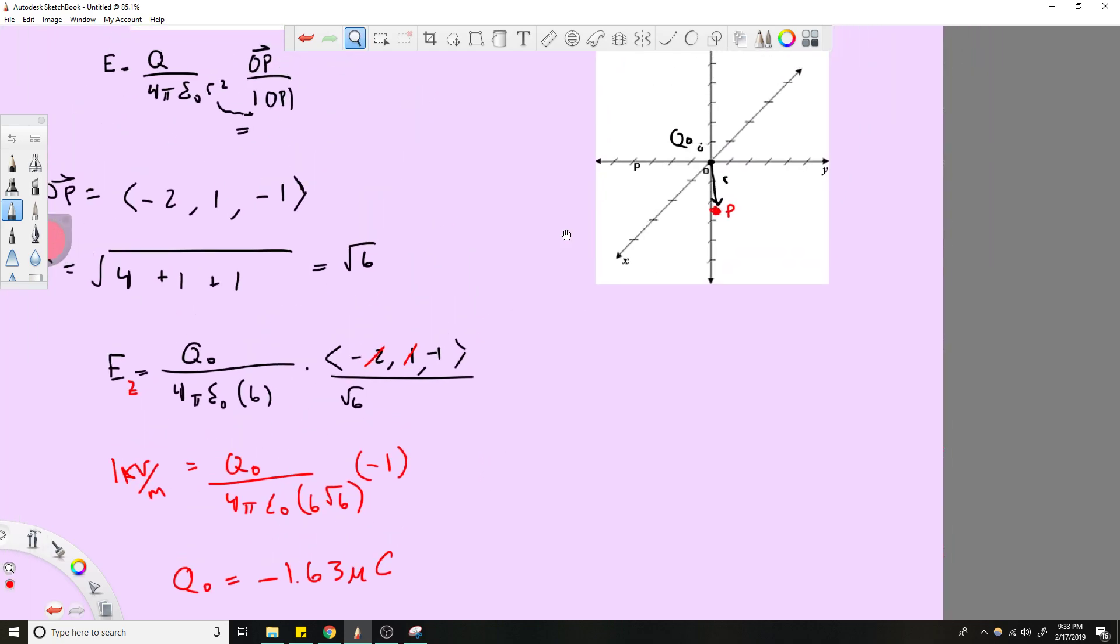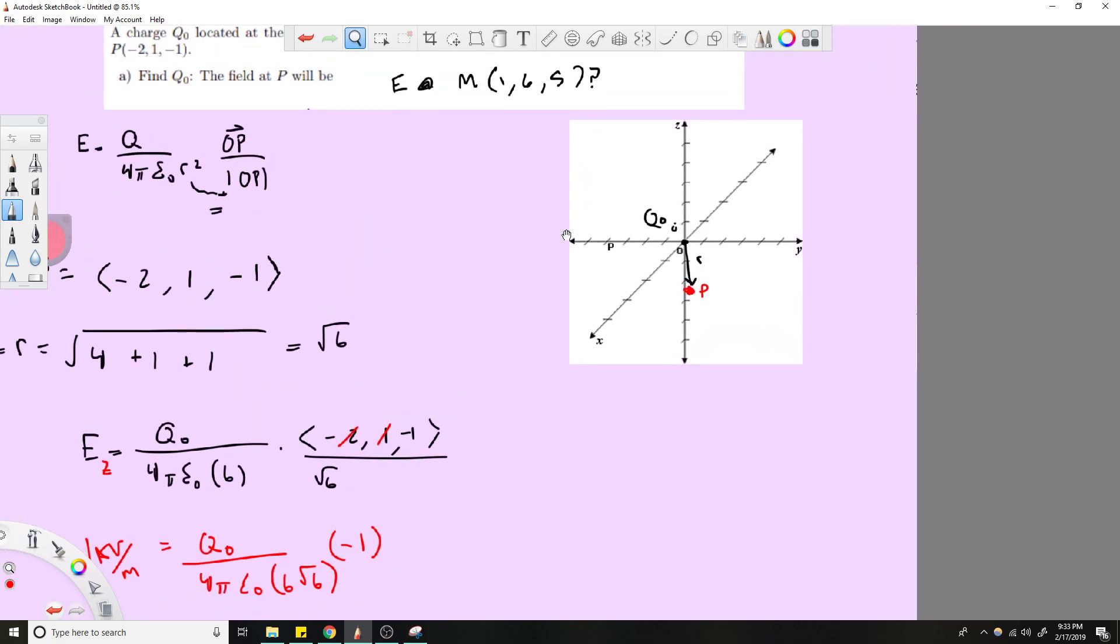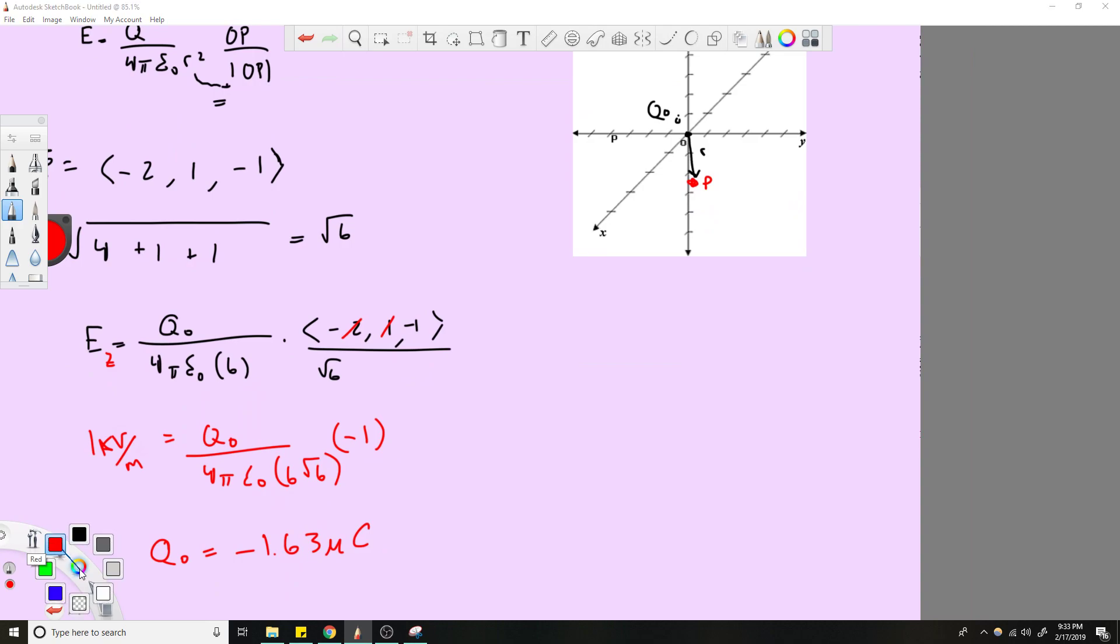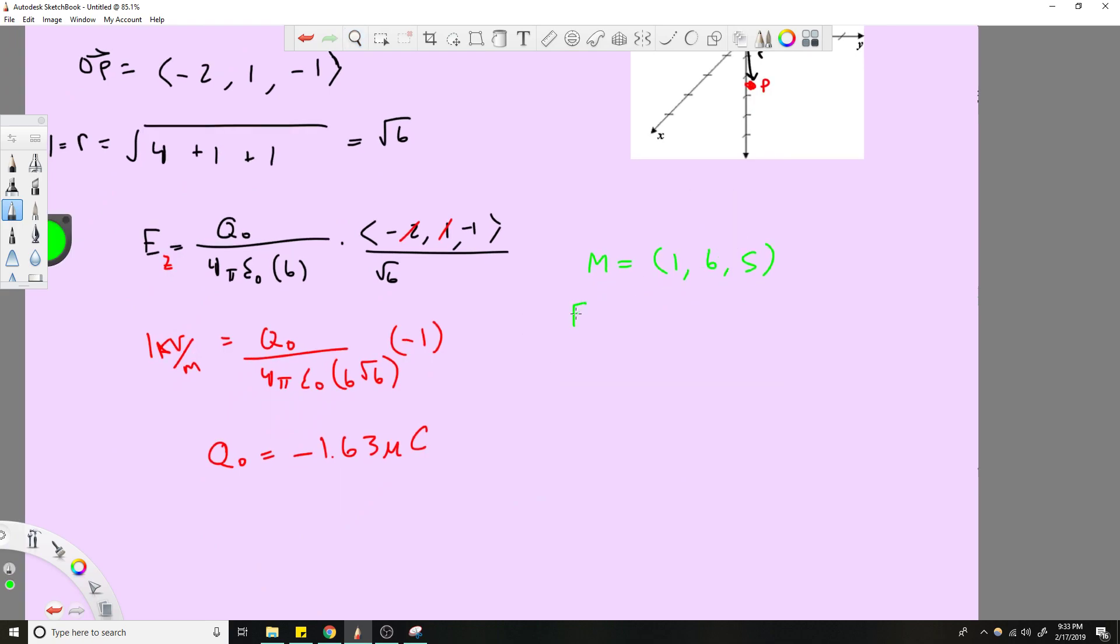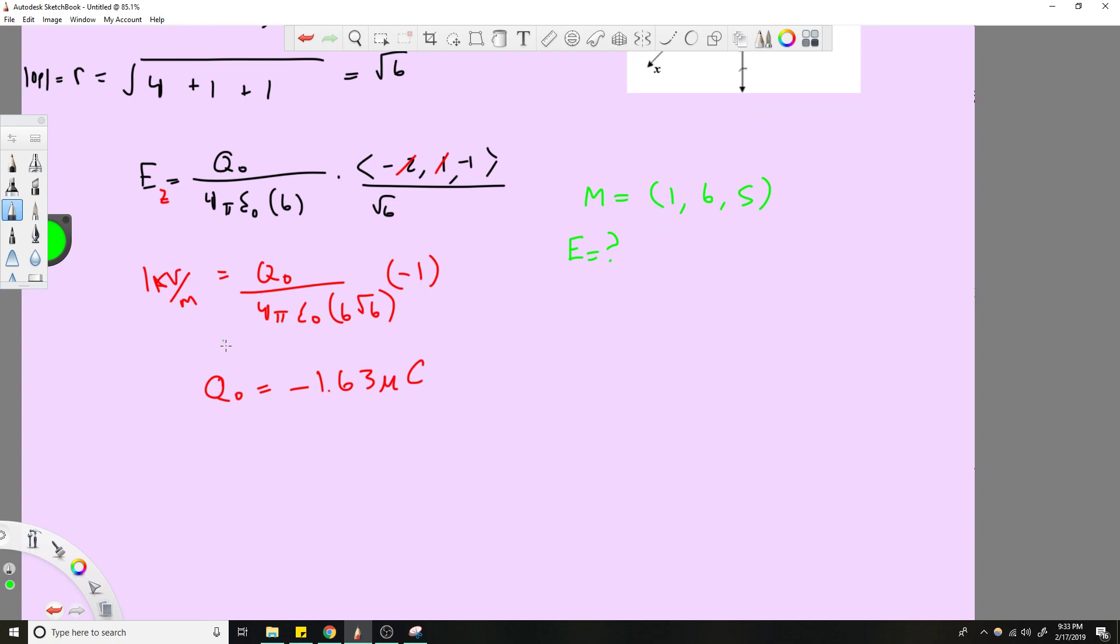And then the next part of the question wants to know the E at M equals 1, 6, 5. And E is a question mark. So we want to know, it's basically the reverse of what we just did. We want to know the electric field now, and now we know the given charge, so we'd have an equation that looks something like this.